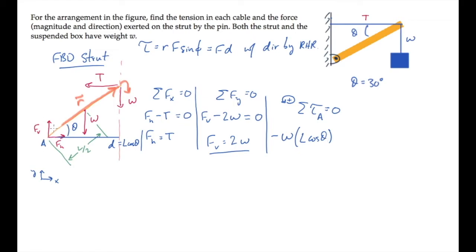Now let's look at the torque produced by the weight of the strut itself. Again, using the right hand rule, we see that this torque is in the negative direction. The right hand thumb points into the screen. The force has a magnitude of W, and the moment arm is shown here in blue, with a length of L over 2 cos theta.